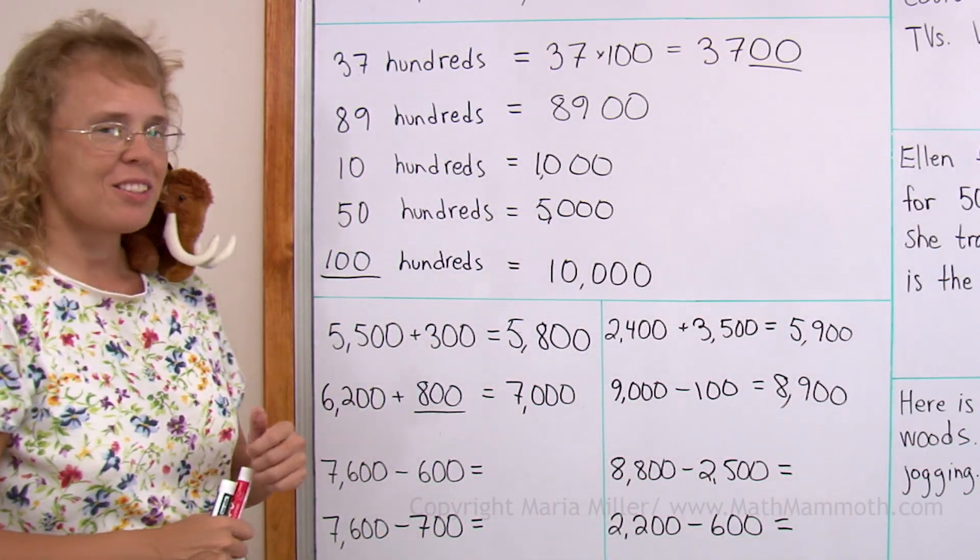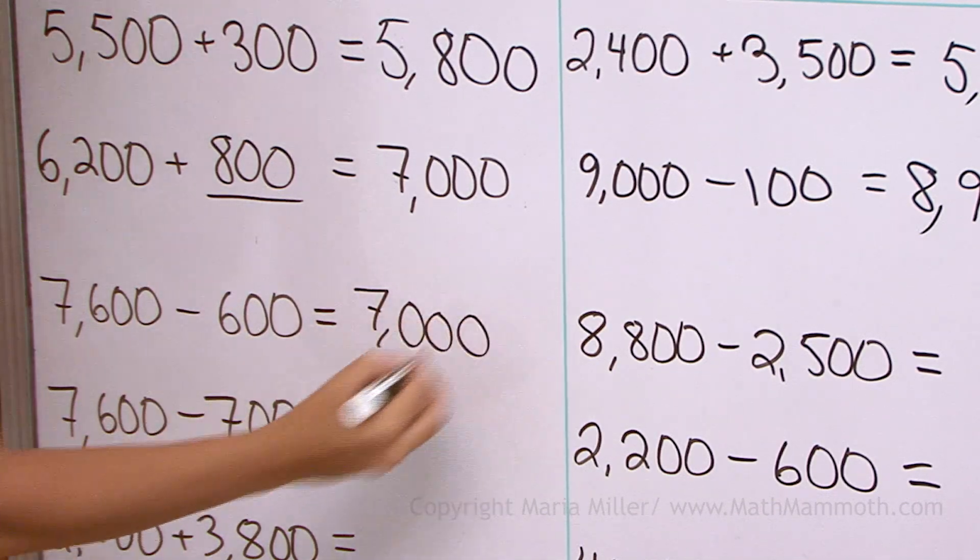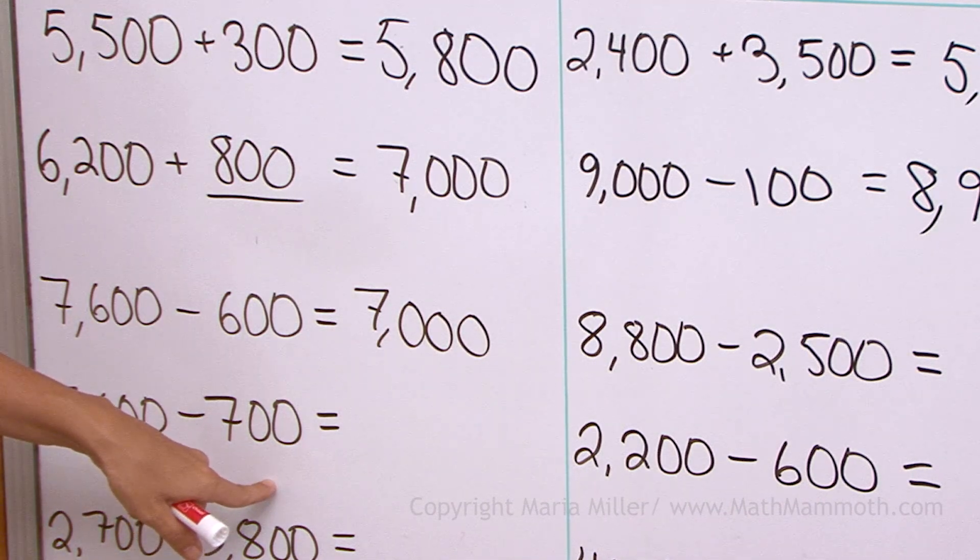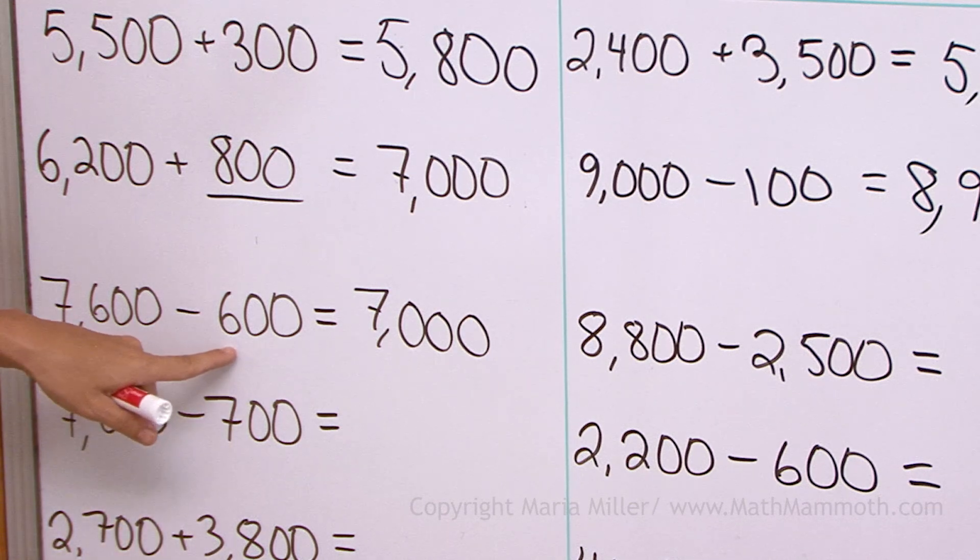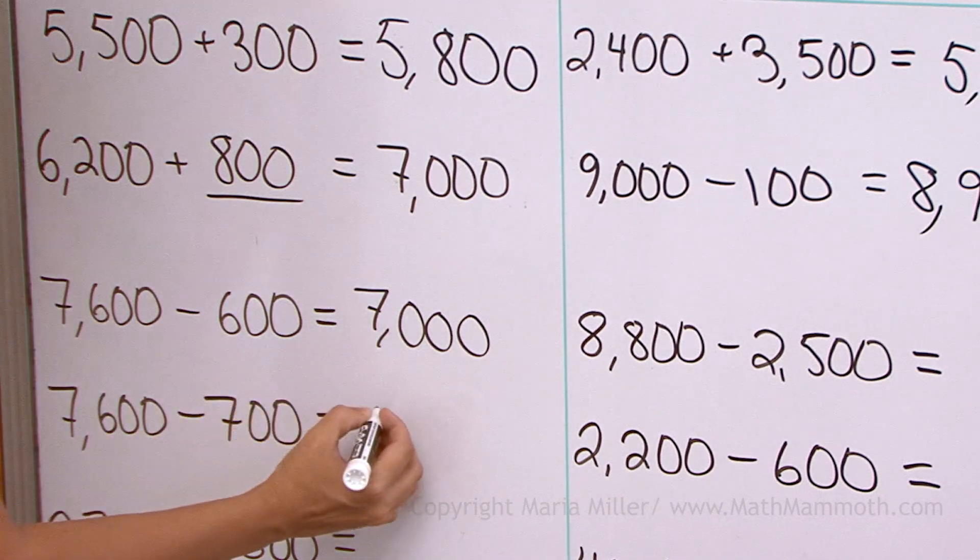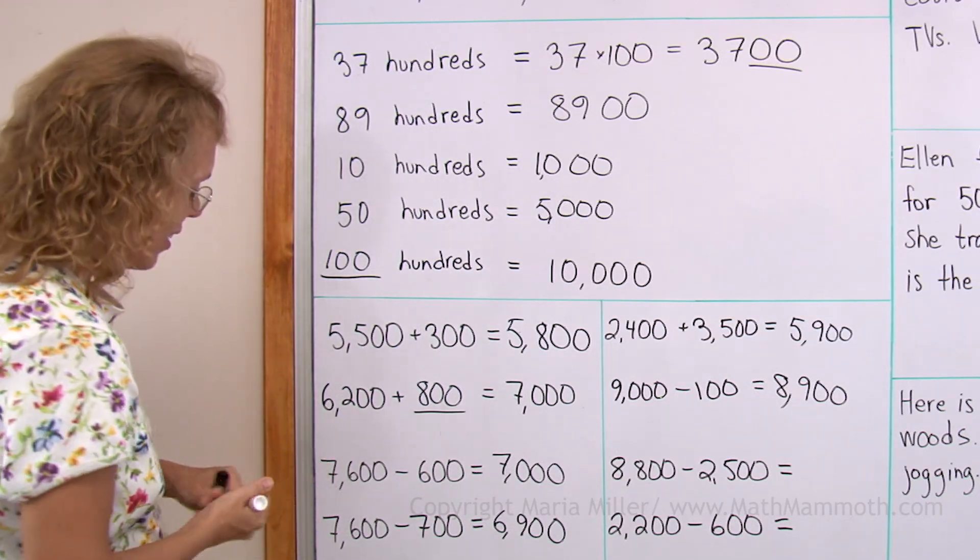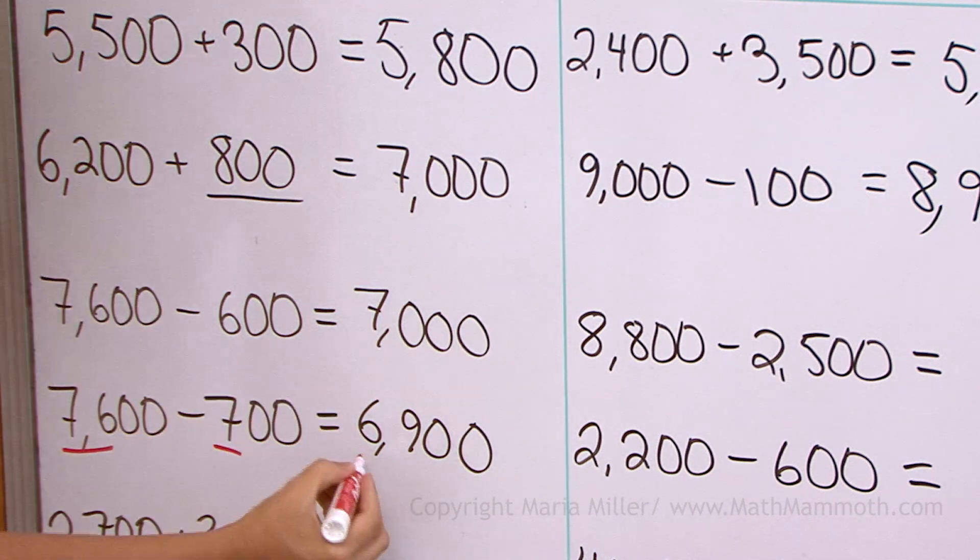7600 minus 600. Pretty easy. I think we only have 7000 left. But how about this one? 7600 minus 700. Compare it to this one. We take away 100 more than what we did here. So the answer is 100 less than 7000. So it would be 6900. Or you can think of this as being 7600 minus 700. 76 minus 7 is 69.